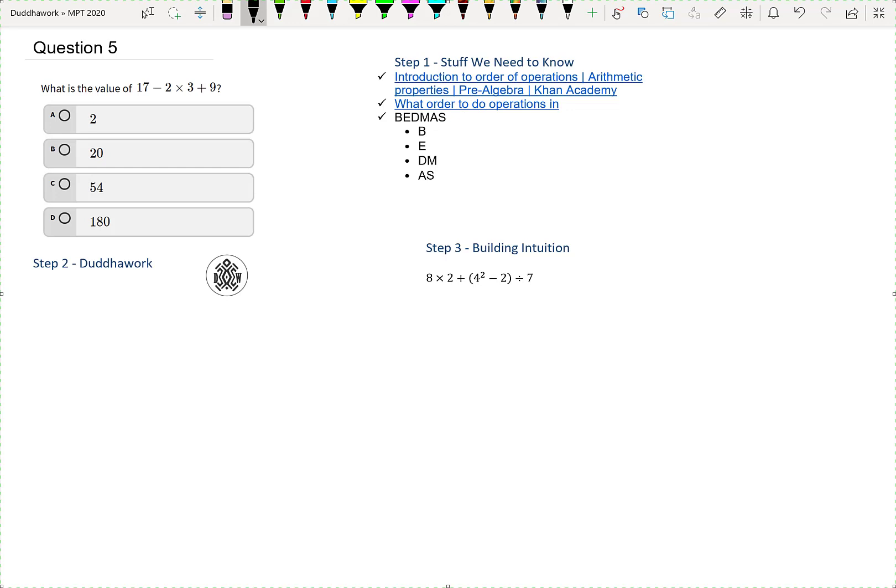So the first thing we do is we do brackets, and then exponents, and then division or multiplication, which one comes first. So left to right is usually the indication, and then this is addition or subtraction.